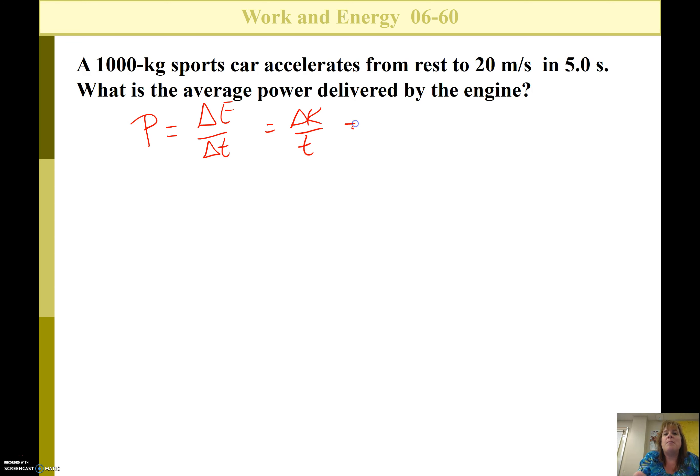So that means we're changing the kinetic energy over time. The power delivered by the engine changes its kinetic energy. We have kinetic energy final minus kinetic energy initial over time. Kinetic energy initial starts from rest, so that's zero. So we do one-half mass of the car times velocity final squared over time, and that will give us our power.